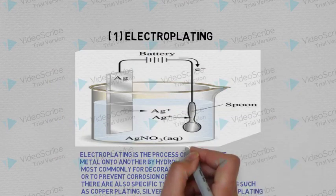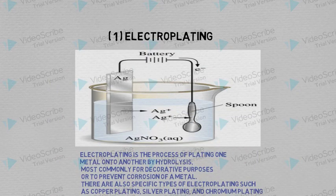Electroplating is the process of plating one metal onto another by electrolysis, most commonly for decorative purposes or to prevent corrosion of a metal. There are also specific types of Electroplating such as copper plating, silver plating and chromium plating.